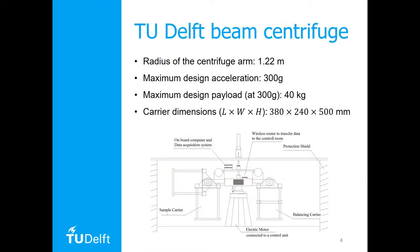Let's have a closer look at the TU Delft centrifuge. First of all, it's a beam centrifuge as opposed to a drum centrifuge. Some characteristics: the distance between the platform and rotation axis during spinning is about 1.22 meters. The sample carrier will rotate around a hinge at the end of the beam to almost 90 degrees during the test. Maximum acceleration is 300 g. Maximum payload at 300 g is 40 kg. Both platforms can carry models and actuators up to a height of 40 cm. The width of the platform is 24 cm and its length is 38 cm.